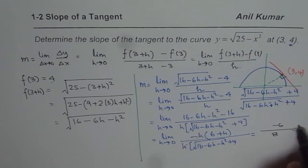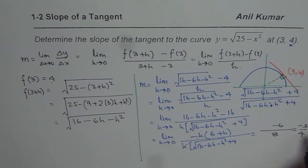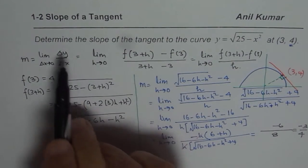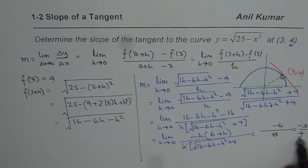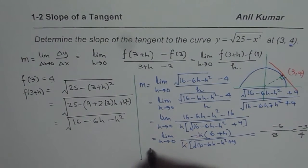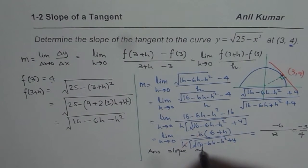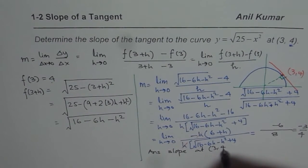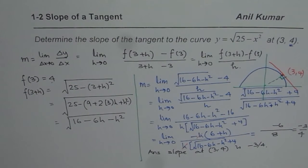Dividing both by 2, you get minus 3 over 4 as our answer. So therefore, the slope of the tangent on this curve at 3, 4 is minus 3 over 4. So that is the slope. So our answer is slope at 3, 4 is minus 3 over 4.